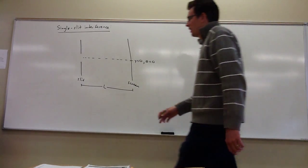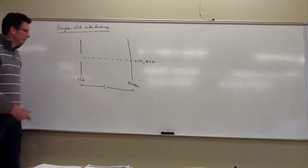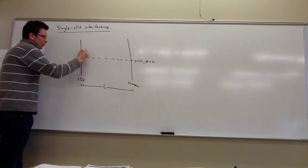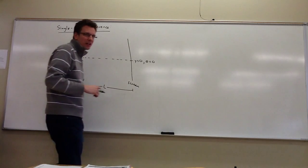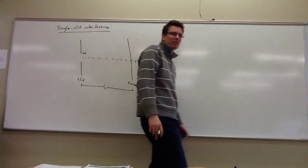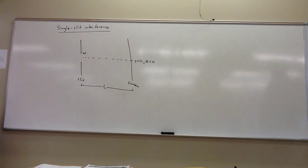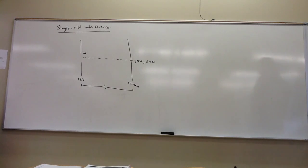The only difference is that now, instead of having two slits, I have just one slit, and that has a width w. So w is the distinguishing parameter from d, which is the distance between two slits. Now we have w, which is the width of one slit.